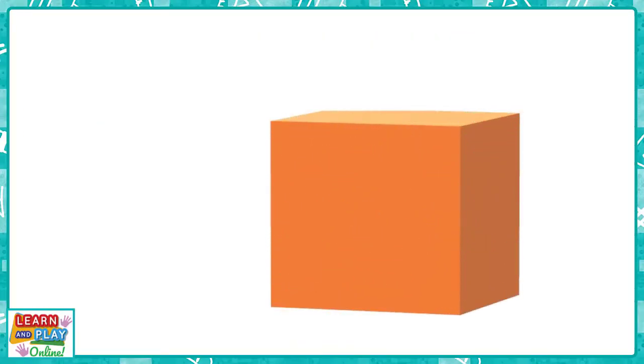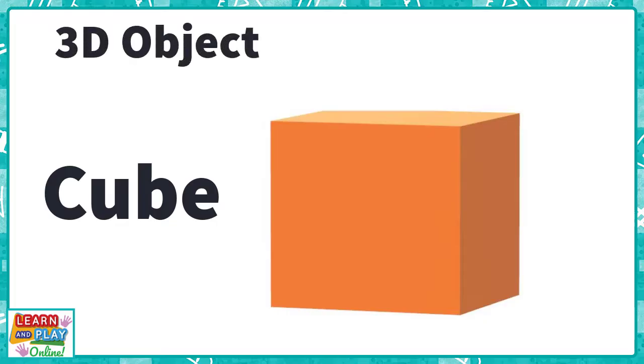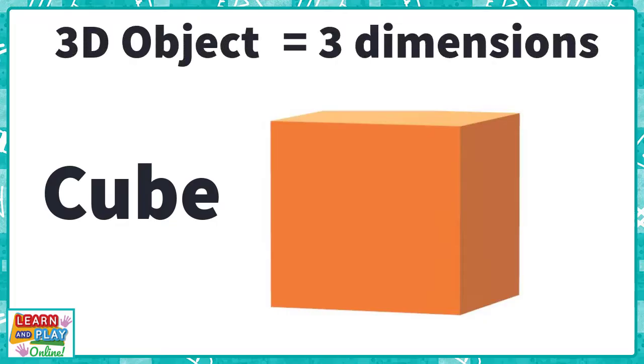This is called a cube. A cube is a 3D object. It is a 3D object because it has three dimensions, which means it is not flat. It is in fact an object that you can hold. The three dimensions of a cube are the length, the width, and the height.